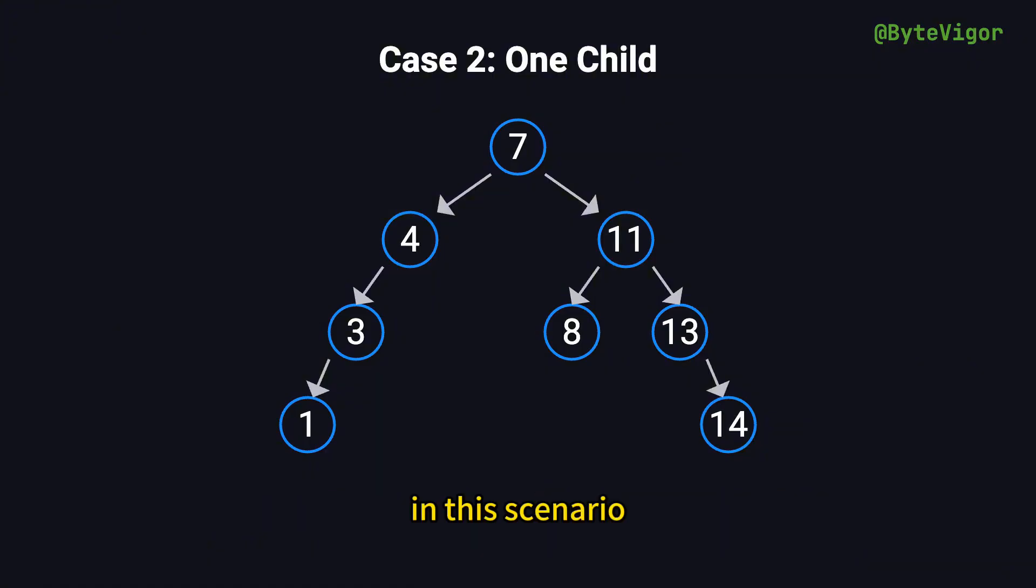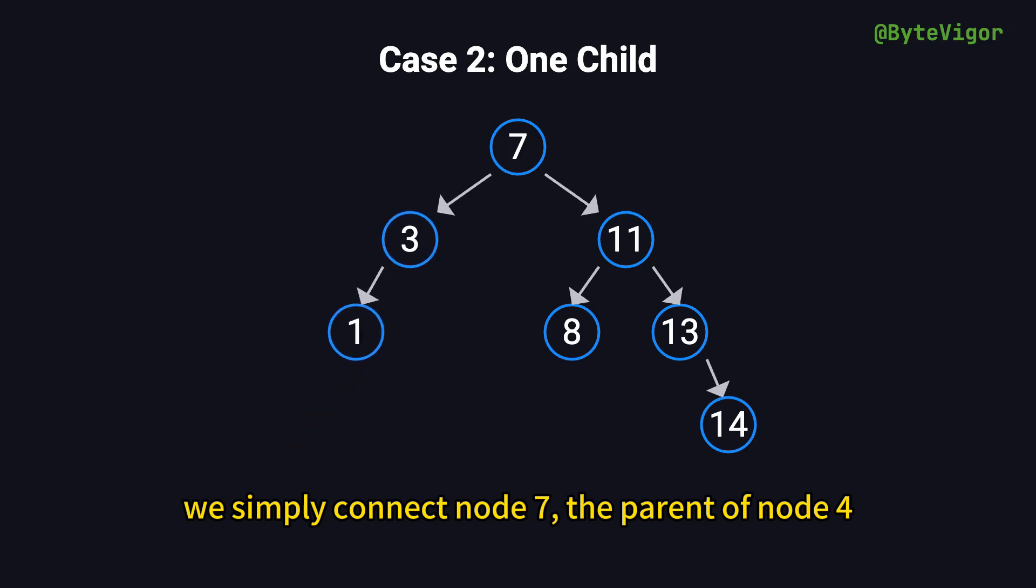The second case involves deleting a node that has only one child. In this scenario, we bypass the node to be deleted by directly linking its child to its parent, ensuring that the binary search tree properties are maintained. For example, if we need to delete node 4, which has only one left child, node 3, we simply connect node 7, the parent of node 4, directly to node 3.